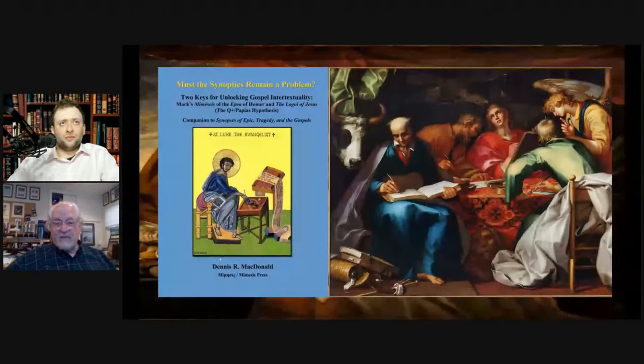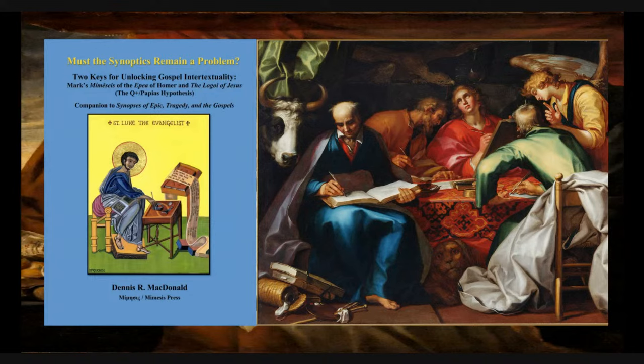If you go to Dennis R. McDonald, you will not find my books. You used to be able to. The only way to get the synopses of Epic Tragedy in the Gospels is by title. You cannot do it by my name. If you do it by Dennis McDonald, you will get Must the Synoptics Remain a Problem? But you won't get it if you go to Dennis R. McDonald. I'm going to try to correct this this weekend. Unfortunately, it's not very easy to get these books, and Amazon is the only commercial distributor.